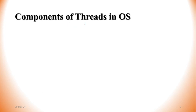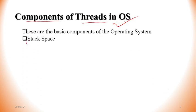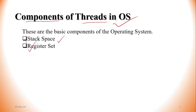Hello dear learners, today I will talk about the components of threads in operating systems. The basic components are: number one, stack space; number two, the register set; and number three, the program counter.